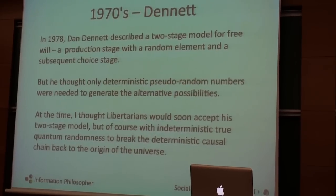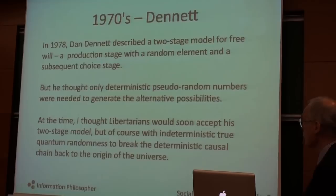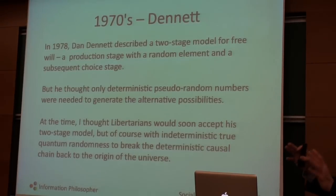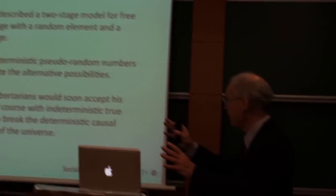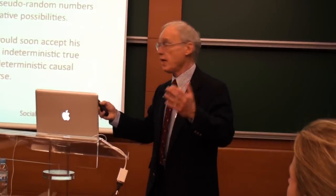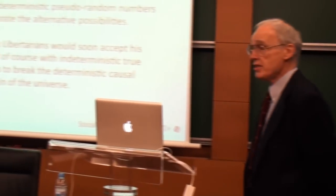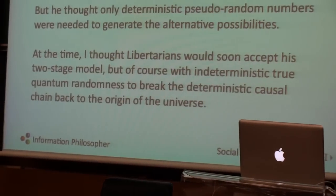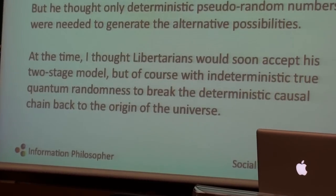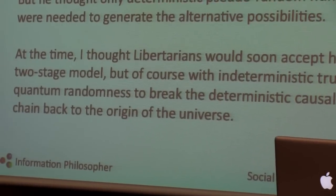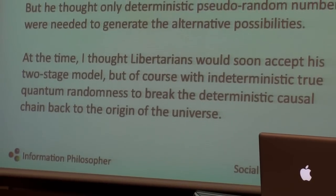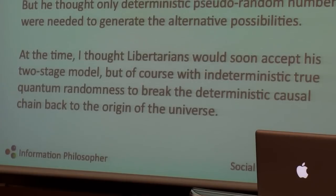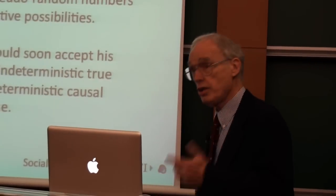Then in the 1970s, I got Dan Dennett's book called Brainstorms, in which he described a two-stage model for free will: first a production stage, generating possibilities randomly, and then a subsequent choice stage. But Dennett thought only deterministic pseudo-random number sequences, like his computer models, were needed to generate the alternative possibilities to be considered and evaluated later. At the time, I thought libertarians would soon accept this two-stage model — with indeterministic, true quantum randomness to break the deterministic causal chain back to the origin of the universe.